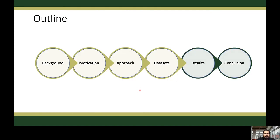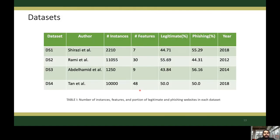Let's discuss our datasets. In this work, we use four publicly available datasets. The table shows for each dataset the number of available instances, features, and the percentage of legitimate and phishing samples. All datasets only have a few thousands of data instances, which may not be sufficient to train an efficient machine learning network for phishing detection.